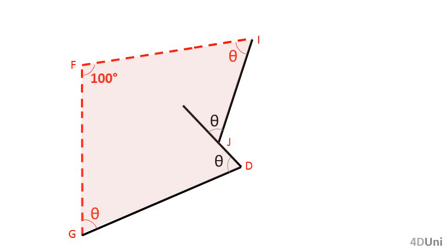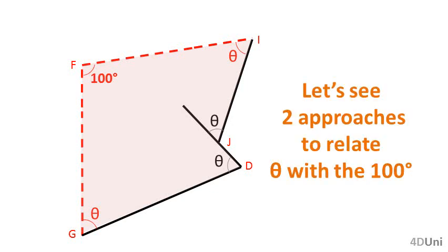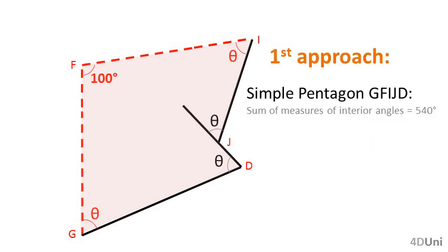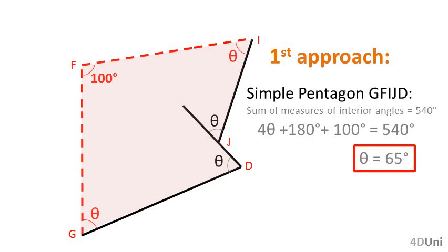We want to relate the unknown value theta with the 100 degrees. The first approach: from the figure, pentagon GFIJD is a simple polygon, so the sum of the measures of all its interior angles is 540 degrees. Noticing that the measure of the interior angle at J is 180 degrees plus theta, we have: 4 times theta plus 180 degrees plus 100 degrees equals 540 degrees, from which we obtain theta equals 65 degrees. That is the answer to our problem.